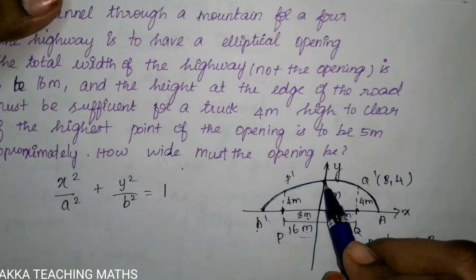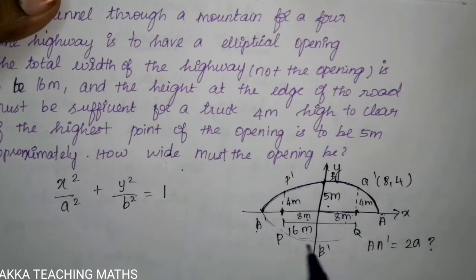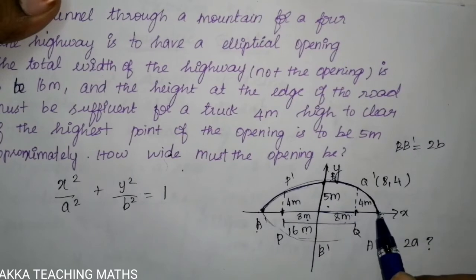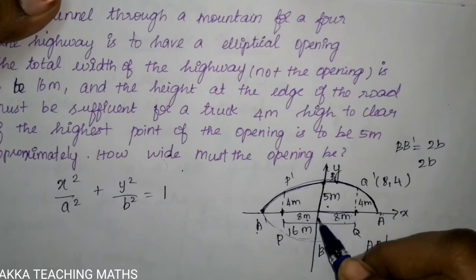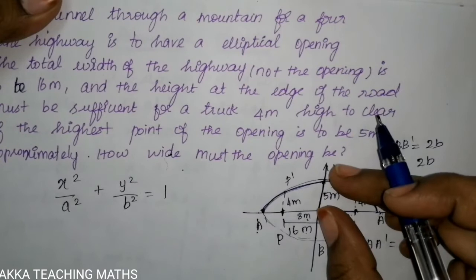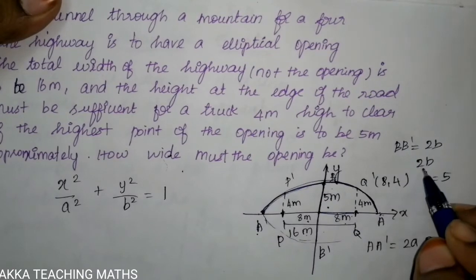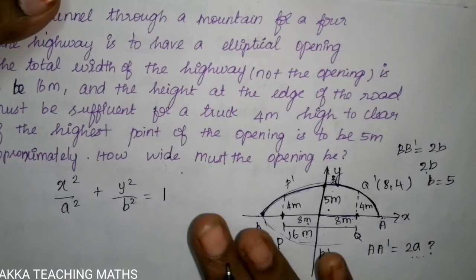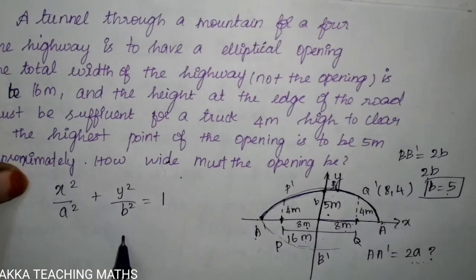This is A-A, the major axis. B-B is the minor axis. B-B is two-b. Now, the highest point is 5 meters, which is b. Since b is half of 2b, we have 2b = 5, so b = 5/2. We substitute b² = 25/4, so the equation becomes x² / a² + y² / (25/4) = 1, which gives x² / a² + 4y² / 25 = 1.